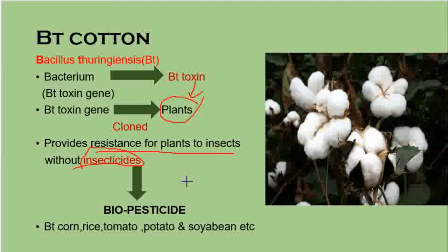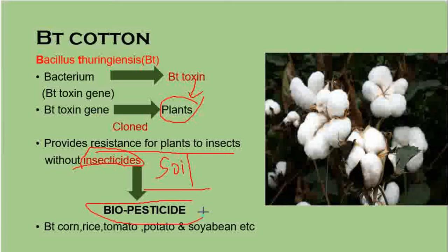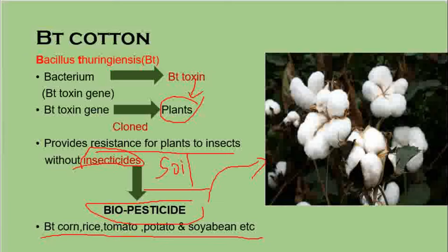This cloning provides resistance to plants against insects without the use of chemical insecticides, which can destroy soil. The plant itself acts as a biopesticide — a pesticide derived from natural materials such as animals, plants, bacteria, or certain minerals. In this case, the plant protects itself from insect attack. Examples include Bt cotton, rice, tomato, potato, and soybean.